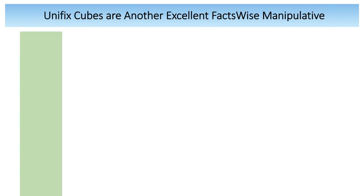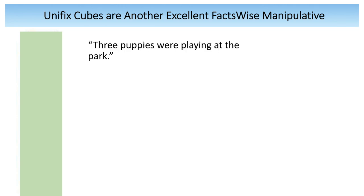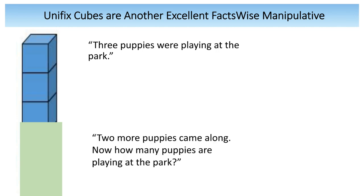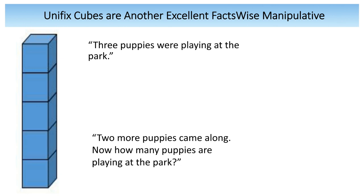If you'd rather, you could certainly use Unifix Cubes — they're another really excellent FactsWise manipulative — and you could go through the same process. There are 3 puppies playing at the park, and 2 more puppies came along, now how many puppies are playing at the park? And, once again, they would be able to reveal the 5.